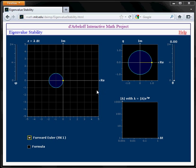The function that relates these two plots is the amplification factor. You can see here when you browse to the page already the eigenvalue stability region for the forward Euler method.